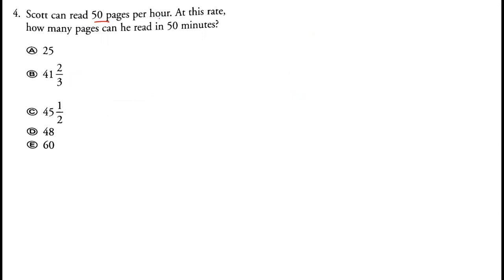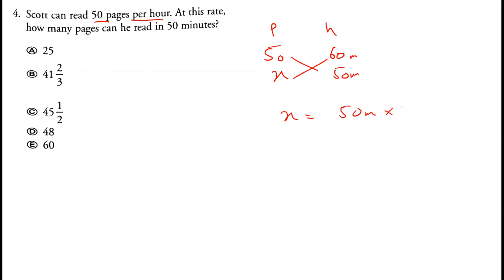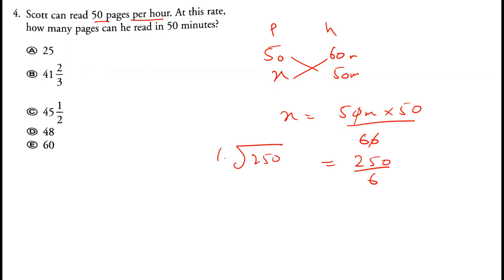Scott can read 50 pages per hour, meaning 50 pages in 60 minutes. At this rate, how many pages can he read in 50 minutes? We set up the proportion: x equals 50 into 50 divided by 60. The zeros cancel, giving five over six. Five into 50 is 250 divided by 6, which is 41 remainder 4, so the answer is 41 and two-thirds. The correct answer is 41 2/3.